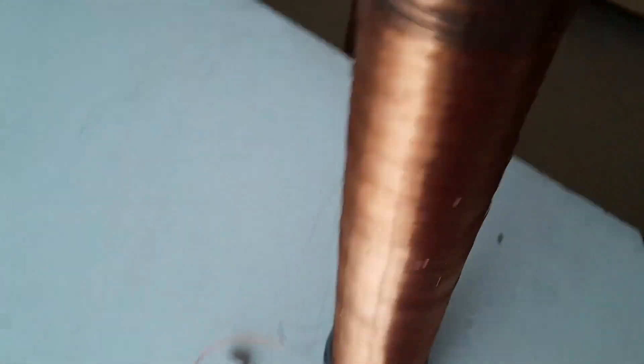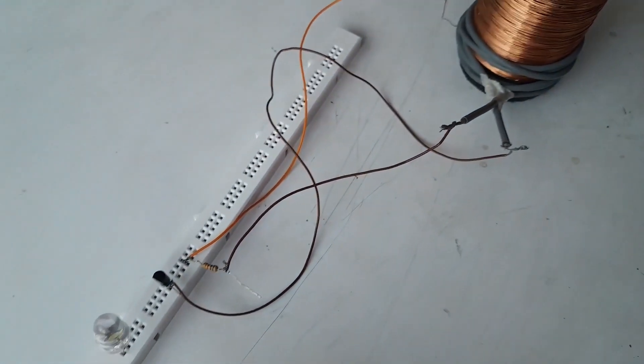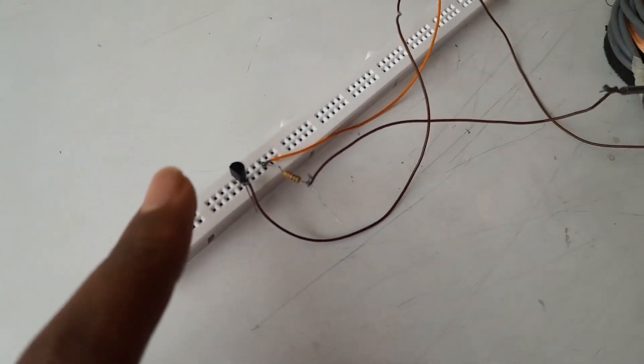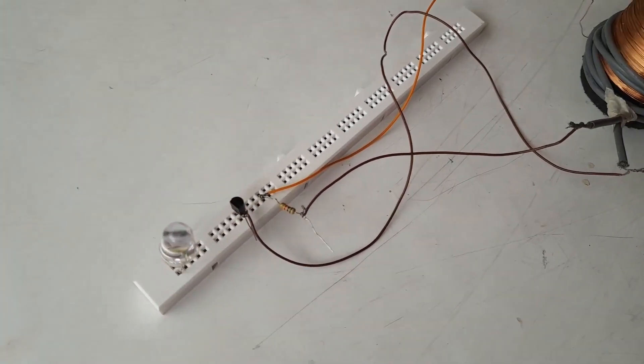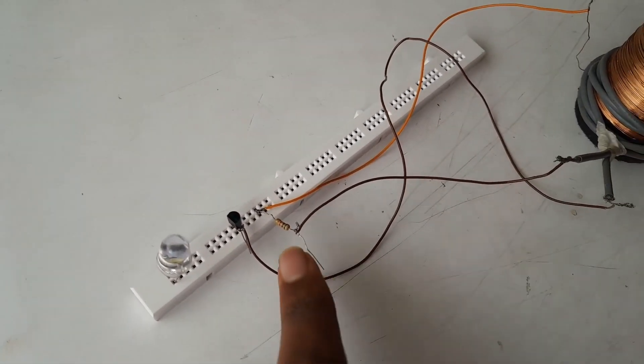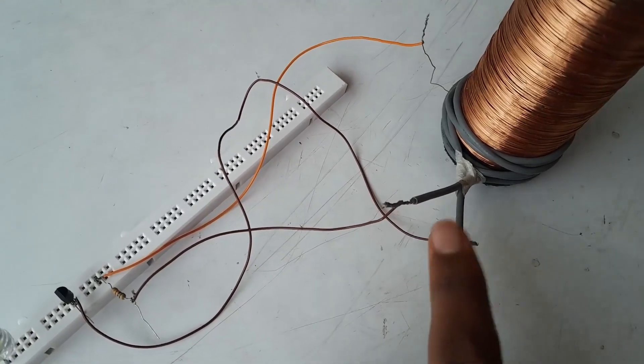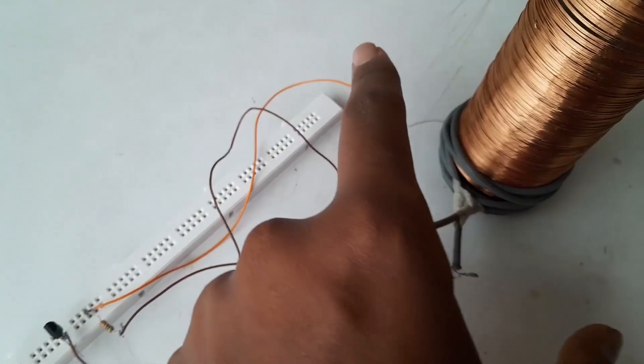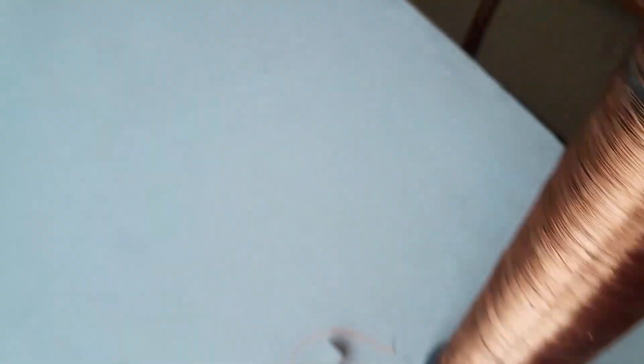Now I've made a Tesla coil just like this. This is a Slayer exciter right here. As you can see, this is an LED, this is a transistor, a resistor. And there are three terminals right here. These two are the primary and this is the end of the secondary of this Tesla coil.